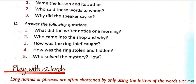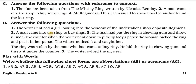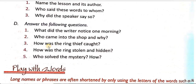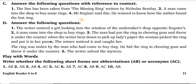Who came into the shop and why? Kaun shop mein aaya aur kyun aaya? A man came into the shop to buy rings. Ek man wahan aaya rings kharidne. How was the ring thief caught? The man had put the ring in chewing gum and threw it under the counter. When the writer bent down to pick up a lady's paper, the woman picked the ring and put it in her purse. Jo woh man aaya tha, usne chewing gum mein ring rakke counter pe paste kar diya.